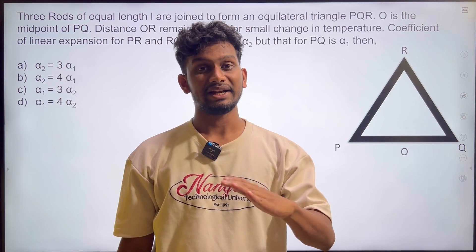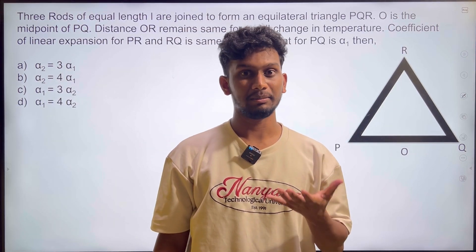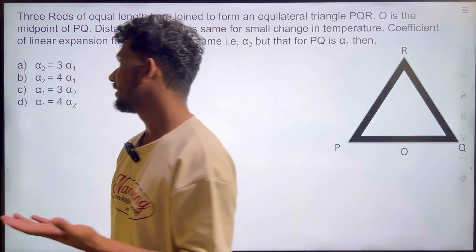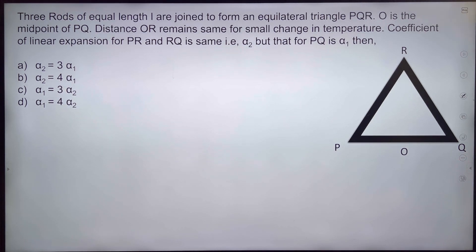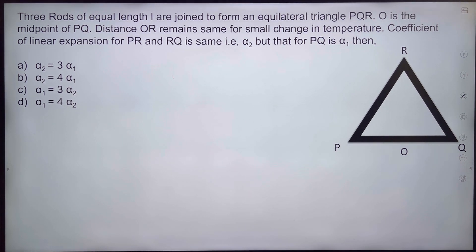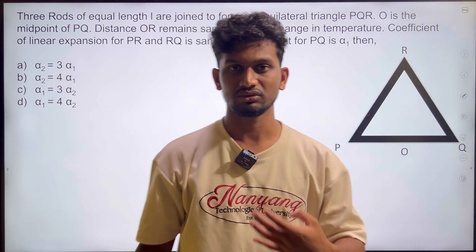Hi, in the chapter Thermal Properties of Matter, I am talking about Thermal Expansion. The problem is that 3 rods of equal length L are joined to form an equilateral triangle PQR. O is the midpoint of PQ, and the distance OR remains the same for a small change in temperature. The coefficient of linear expansion for PR and RQ is alpha2, but for PQ it is alpha1.